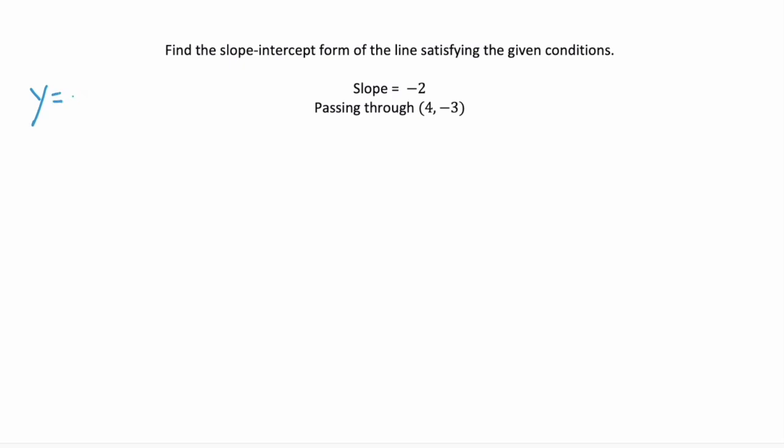Remember slope-intercept form is y equals mx plus b. And for this problem we're told that the slope is negative 2 and it passes through this given point.